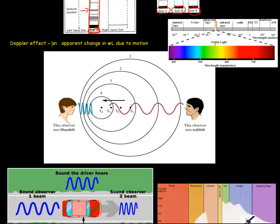The Doppler effect is an apparent change in wavelength due to motion. If you take a look at these two wavelengths — one moving toward the observer — you can see these waves are very tightly packed. It's going to have a very high frequency and very short wavelength. We call that a blue shift. The other observer that's moving away has a larger wavelength and lower frequency wave, which we call the red shift.